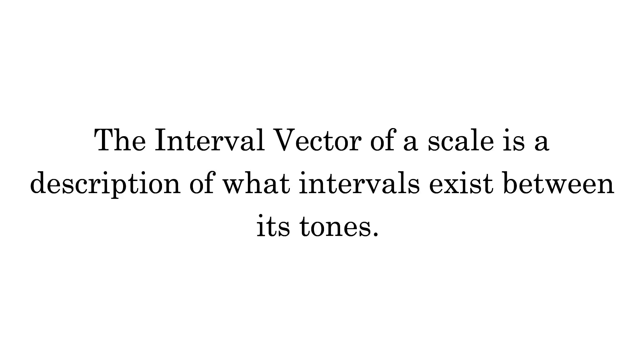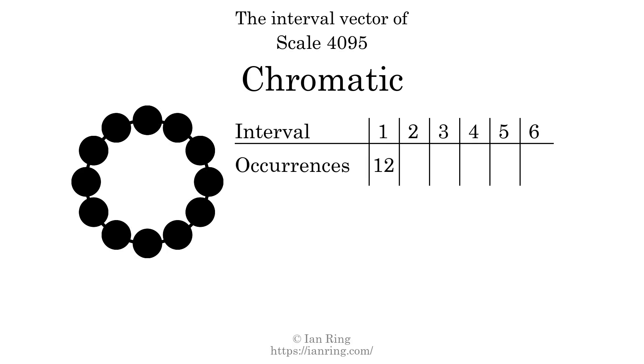The interval vector of a scale is a description of what intervals exist between its tones. There are 12 intervals with the size of one semitone.